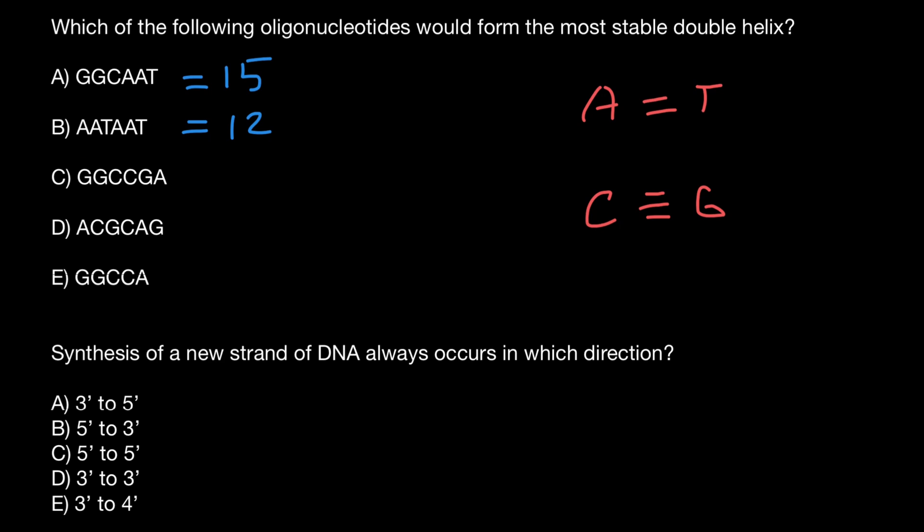The next variant has triple bond, triple bond, triple, triple, triple, and double hydrogen bonds here, which would give us 17 hydrogen bonds.